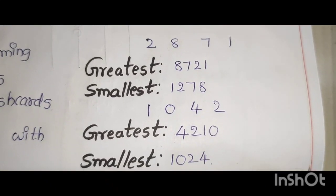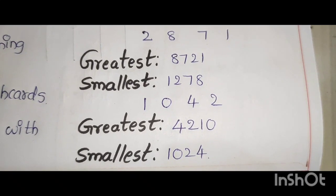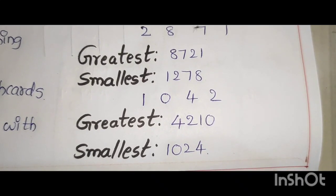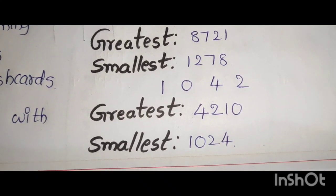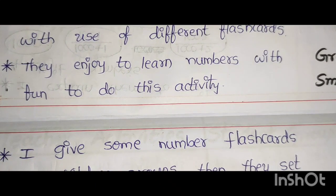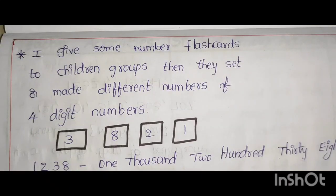I give them to flashcards. 2, 8, 7, 1. Greatest number is 8,721. Smallest number 1, 2078. 1, 0, 4, 2 flashcards. Greatest number is 4,210. Smallest is 1,024. They enjoy to learn numbers with fun to do this activity.